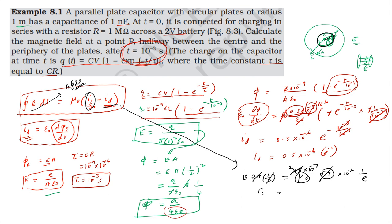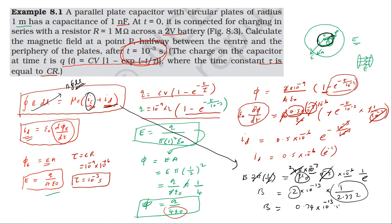Substituting mu naught equal to 4 pi into 10 power minus 7, and the displacement current 0.5 into 10 power minus 6 into e power minus 1 (where 1/e approximately equals 0.368): B equals 0.74 into 10 power minus 13 tesla. So the magnetic field B equals 0.74 into 10 power minus 13 tesla, which is the final answer.